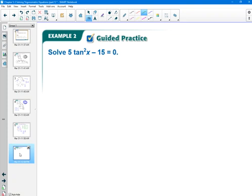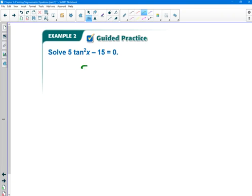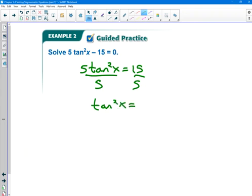Okay, so hopefully you paused it to actually do the problem yourself. And now all I'm doing is working through it to make sure you did it right. That's kind of the goal here. So I'm going to add 15 to each side. Okay, then I'm dividing by five. Okay. Okay, then I'm taking the square root. So tan X is going to equal plus or minus square root of three.